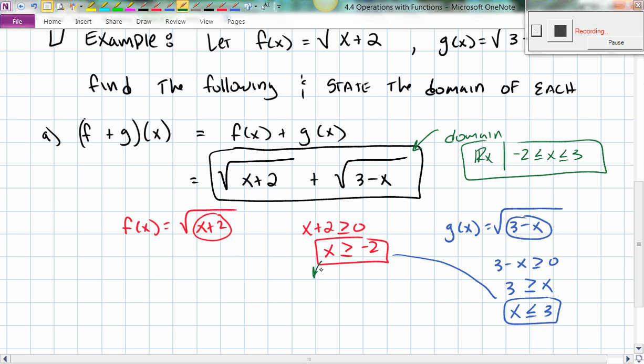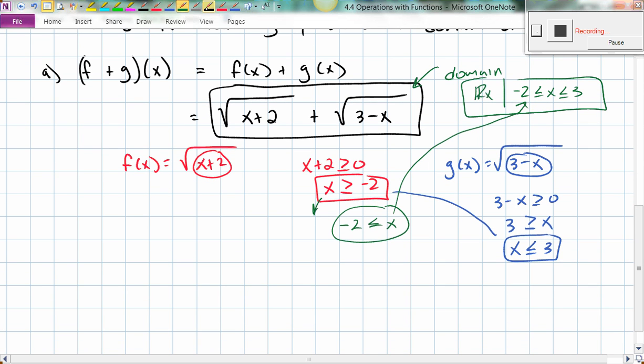And again, so this one, if x is bigger than or equal to negative 2, that means that negative 2 must be less than or equal to x. So that's how I got that information. I plugged it right there, and I combined both of them together. So there's part A.